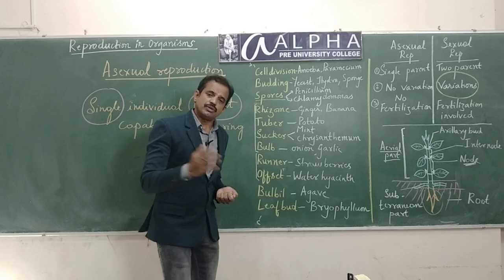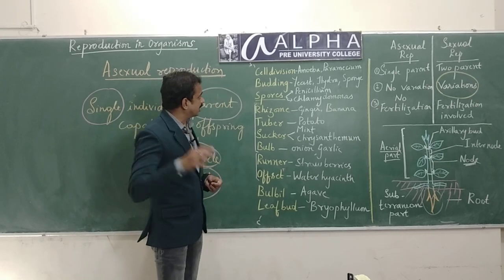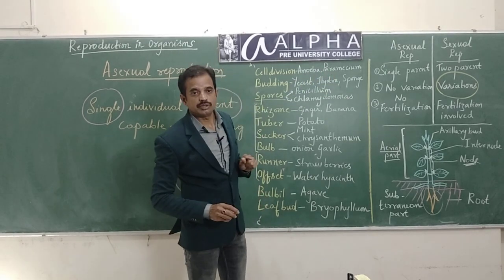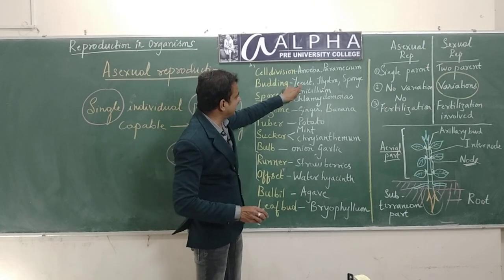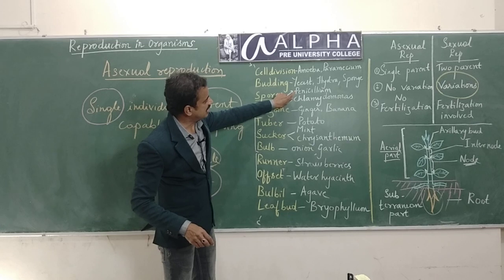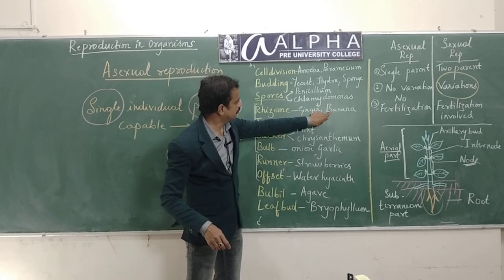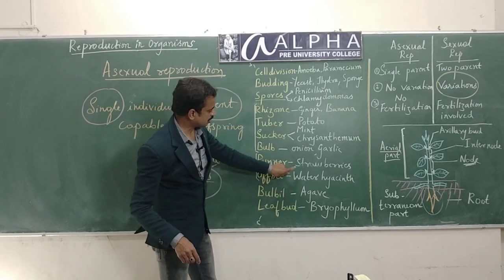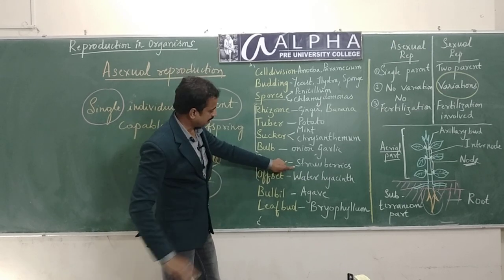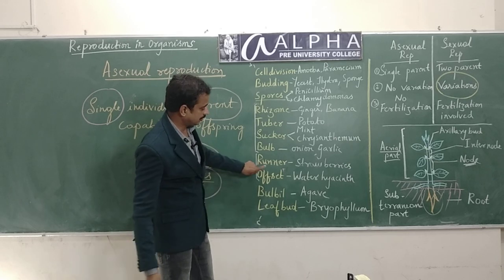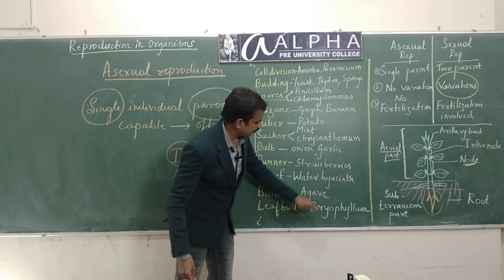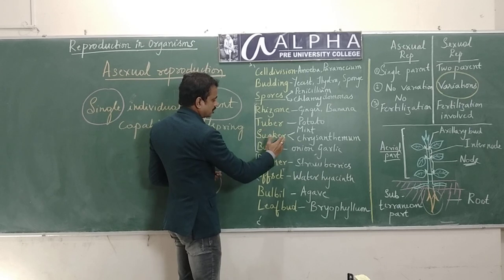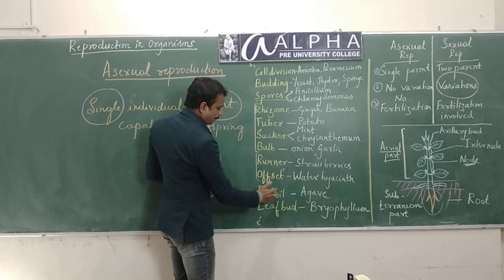Before going to explain, they have taken examples of Amoeba, Paramecium - unicellular/acellular organisms. They have also taken Yeast, Hydra, Sponge, Penicillium, Chlamydomonas, Ginger, Banana, Potato, Mint, Chrysanthemum, Onion, Garlic - Strawberries is not considered in your textbook, I have taken that as an example to help you understand. Also Water Hyacinth, Agave, and Bryophyllum. The methods include cell division, budding, spores, rhizome, tuber, sucker, bulb, runner, offset, bulbil, and leaf bud.